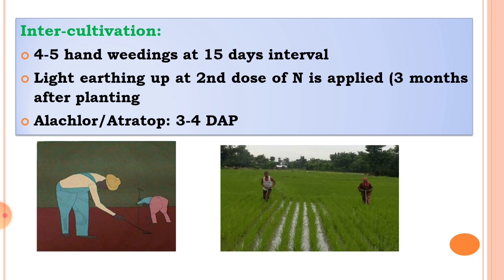It depends upon the intensity of weed — the weed intensity depends upon the weed population. 4 to 5 hand-weedings are given at 15-day intervals.